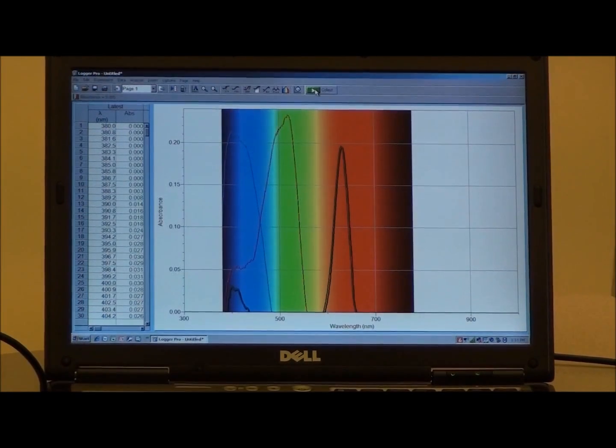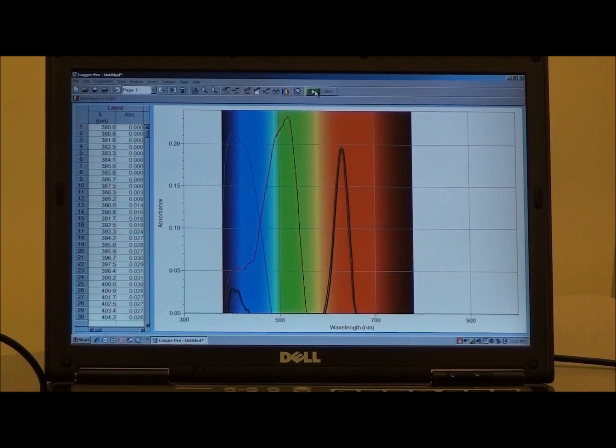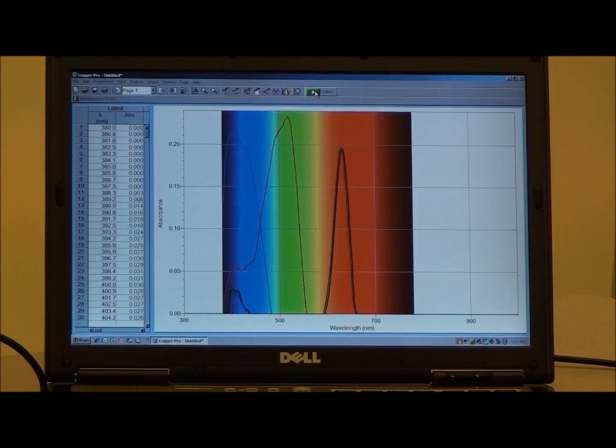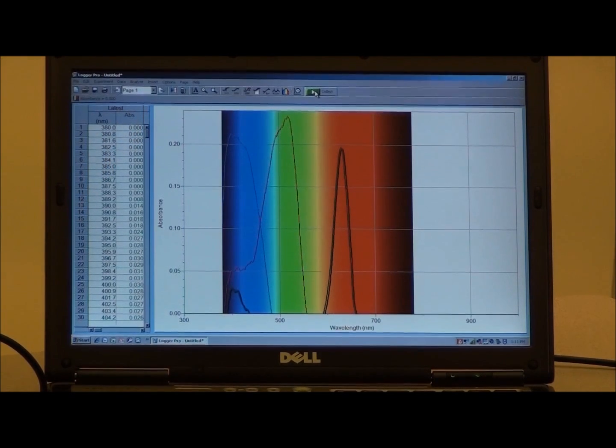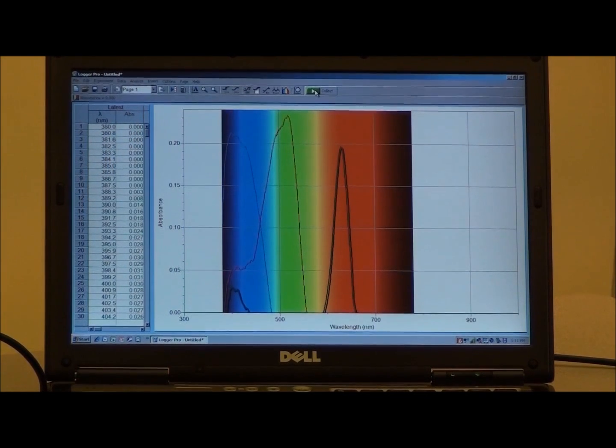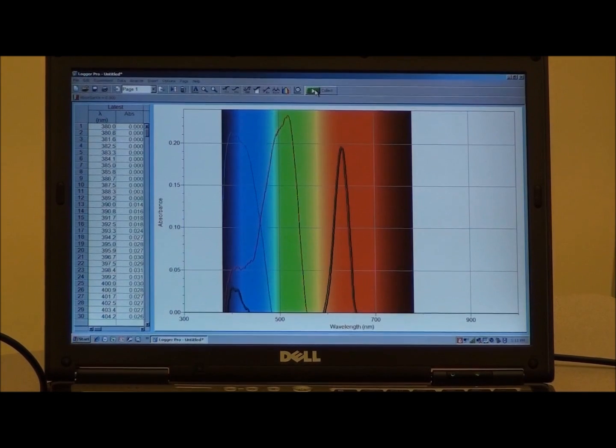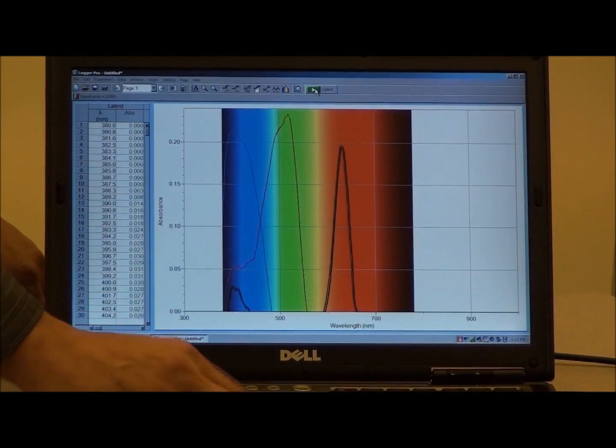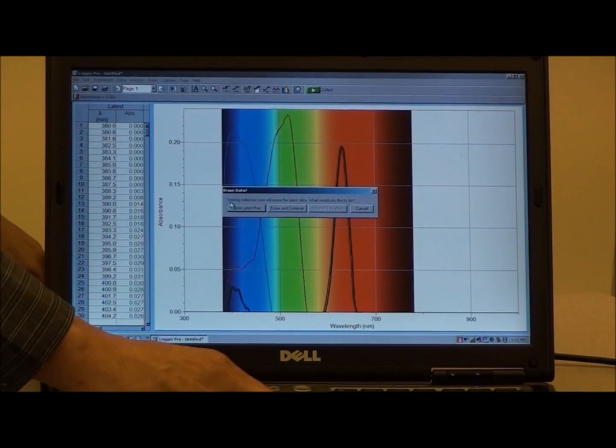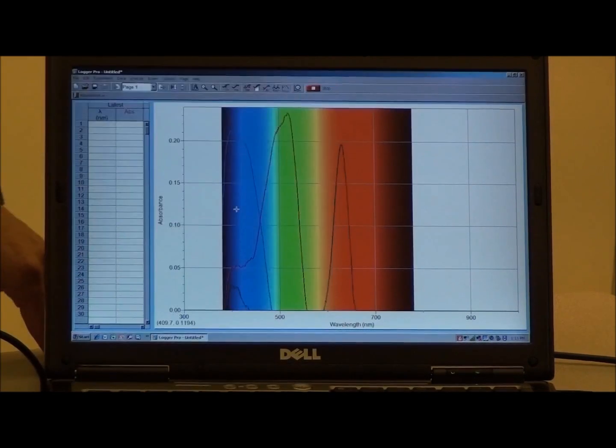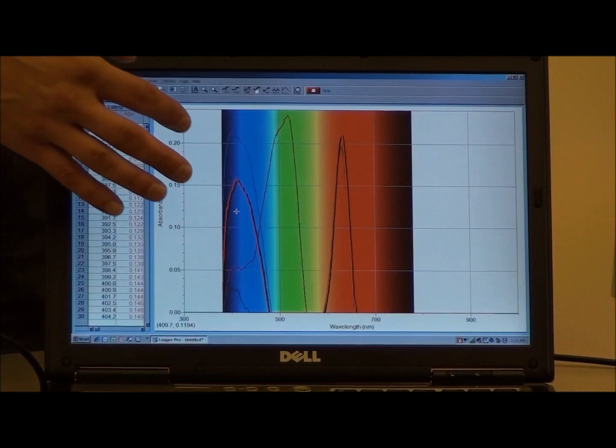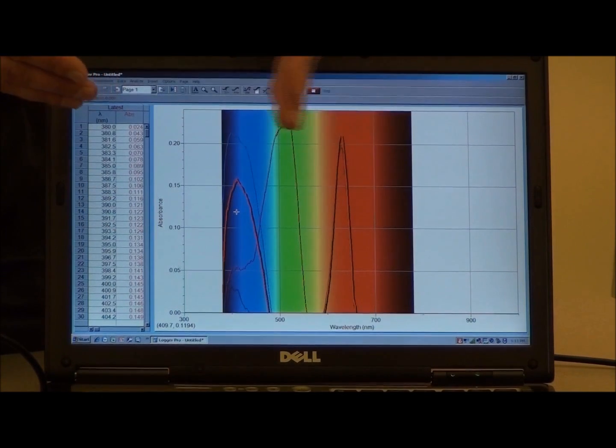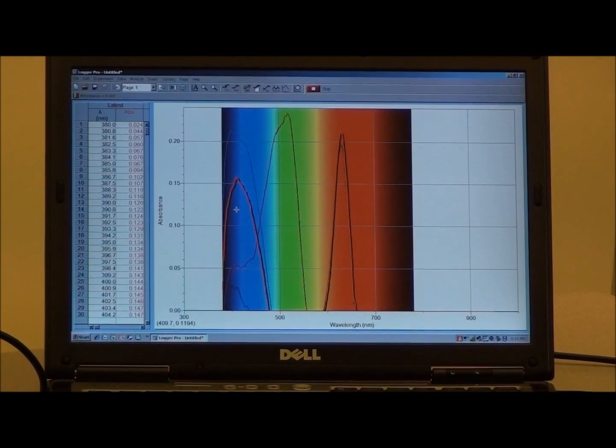What if we had a solution that was green, which of course is a mixture of yellow and blue? Let's take a look at this green solution. Once again, we'll keep the old data on the display. We can immediately see that this solution has two components as expected. One component is yellow and the other component is blue.